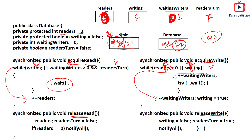W2 wakes up and calls acquire_write. Reader count is not more than zero — false — and writing is also false — false or false is false — so W2 skips the wait, decrements waiting_writers to zero, sets writing to true, and W2 starts writing.